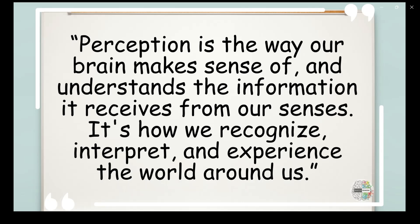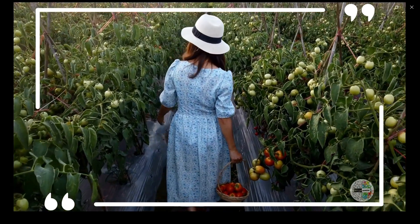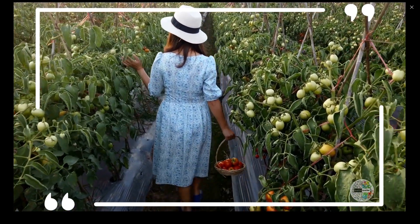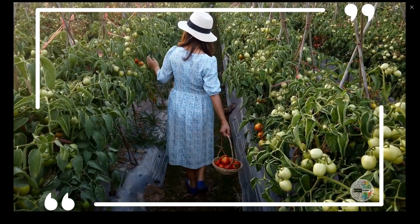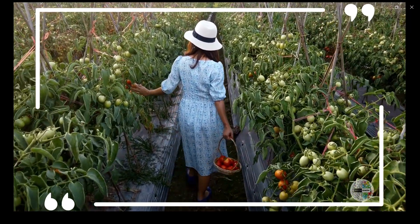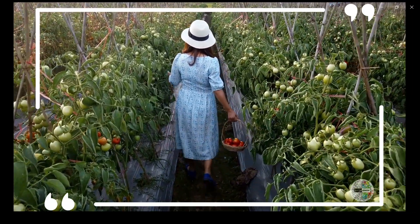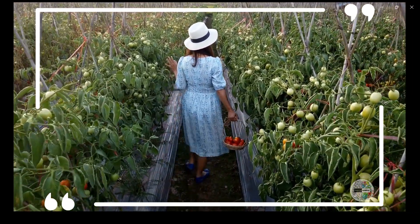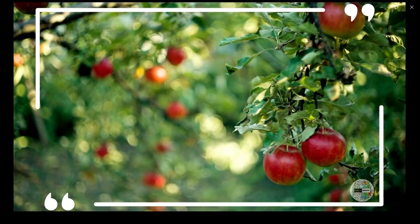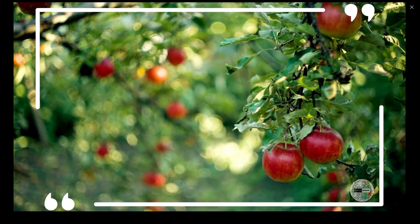Perception is the way our brain makes sense of and understands the information it receives from our senses. It's how we recognize, interpret and experience the world around us. Imagine perception as your brain's way of putting together puzzle pieces. Your senses like sight, hearing, touch, taste and smell provide the puzzle pieces that is the sensory information. Your brain then arranges these pieces to form a complete picture or understanding of your surroundings and experiences.